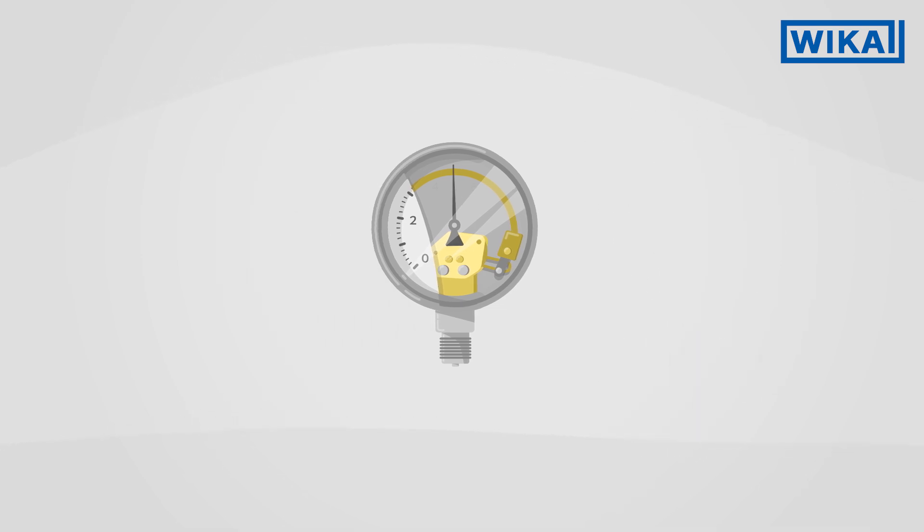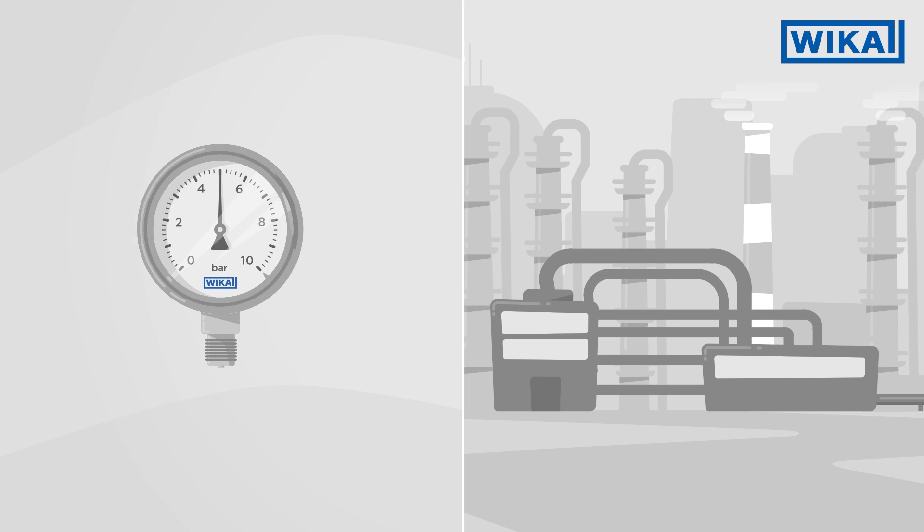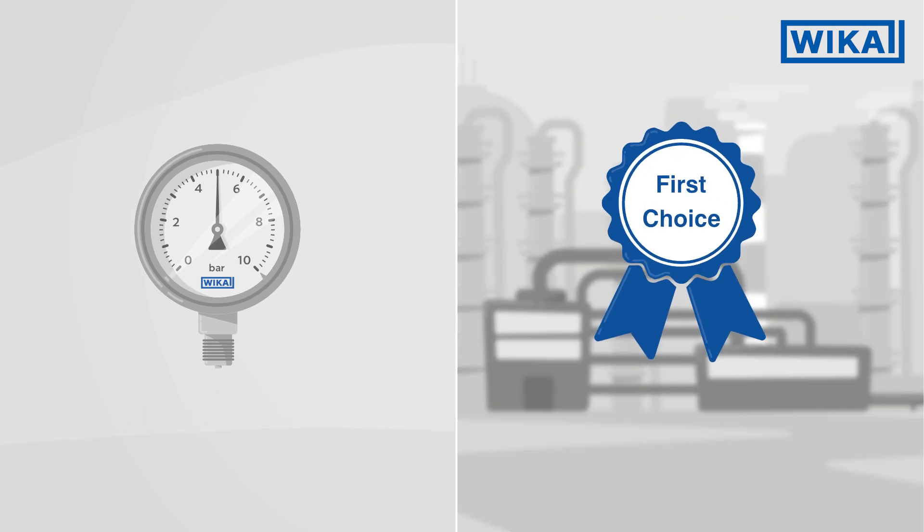With Bourdon tube pressure gauges, the pressure is measured by a Bourdon tube transmitting pressure directly to the pointer. Bourdon tube pressure gauges can be used in a variety of applications and cover the majority of applications.